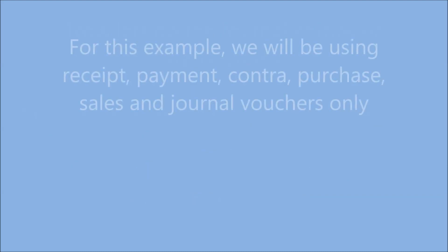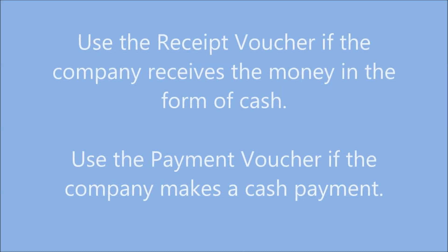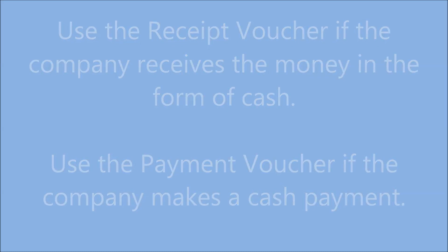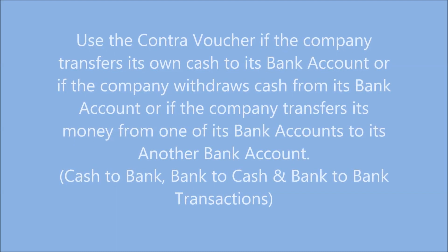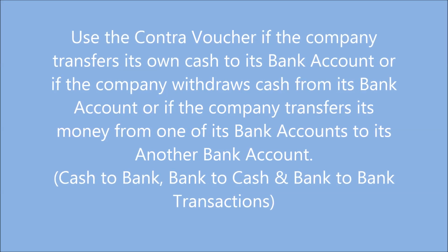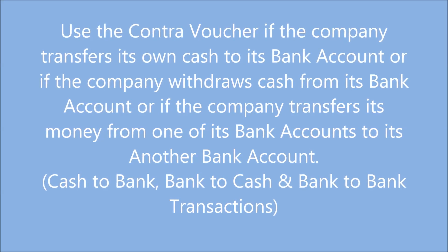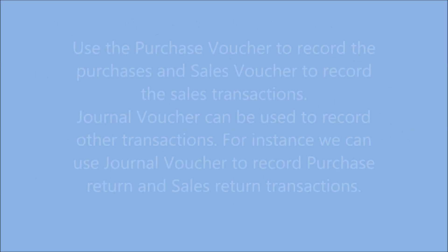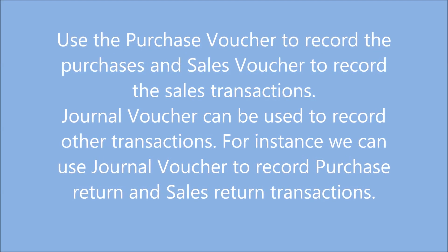For this example we will be using Receipt, Payment, Contra, Purchase, Sales and Journal vouchers only. Use the Receipt voucher if the company receives money in the form of cash. Use the Payment voucher if the company makes a cash payment. Use the Contra voucher if the company transfers its own cash to its bank account, withdraws cash from its bank account, or transfers money from one bank account to another. Use the Purchase voucher to record purchases and the Sales voucher to record sales transactions. The Journal voucher can be used to record other transactions such as purchase return and sales return.